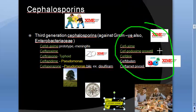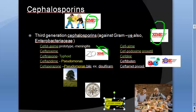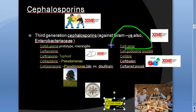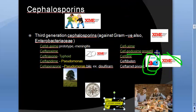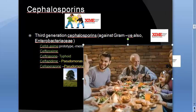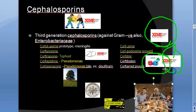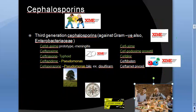Now for third generation oral drugs, notice that 'xime' is common across names. The oral drugs are: cefixime, cefpodoxime — think 'podo' like a camera — and cefdinir — think 'dinner.' So the third generation oral drugs are cefixime, cefpodoxime, cefpodoxime proxetil, and cefdinir.